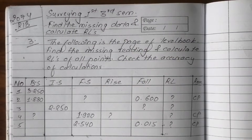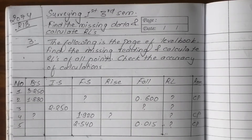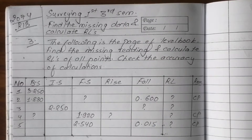In this video, we will find the missing data and calculate the RL. The following is a page from the level book. We need to find the missing reading, calculate the RL of each point, and check the accuracy of the calculation — both mathematical check and automatic check.